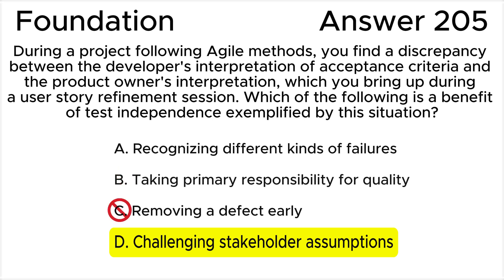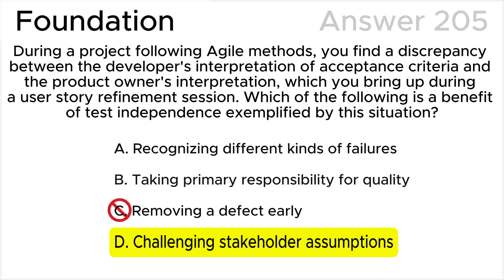Answer C is incorrect. While the effect of discovering this disagreement is the earlier removal of the defect prior to coding, defects can be discovered earlier by various people, not just independent testers.